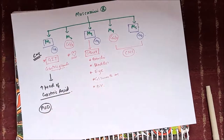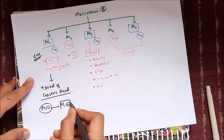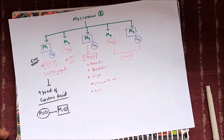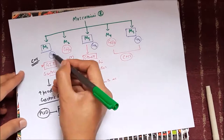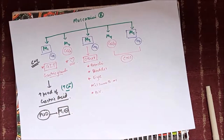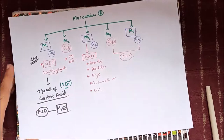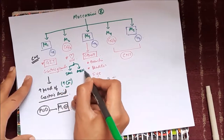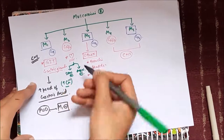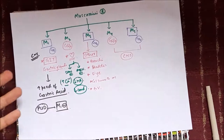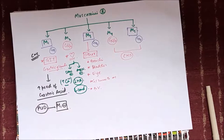M1 receptors are also present in the CNS and in the GIT, where their function is to cause increased production of gastric acid by increasing calcium levels, as they are GQ subtype receptors. Blocking M1 receptors decreases acid production. M2 receptors in the heart are present at the SA node and AV node; being inhibitory, they decrease heart rate and conduction, and excess stimulation can cause various degrees of AV block.